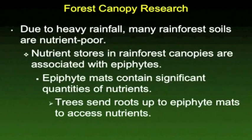Another interesting area of research is taking place in the forest canopy of the rainforest. There's so much rain that it washes out most of the nutrients from the soil, so a lot of the cycling of nutrients actually happens in the canopy — up in the tops of the trees where plants are growing on the trees. These plants are called epiphytes, and they develop a soil of their own on the branches, making for a very interesting ecosystem that researchers have been studying extensively over the past 20 years.